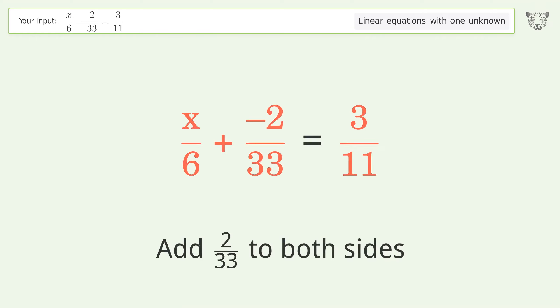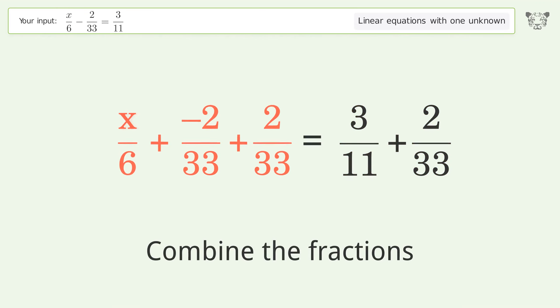Let's solve it step by step. Group all constants on the right side of the equation. Add 2 over 33 to both sides.